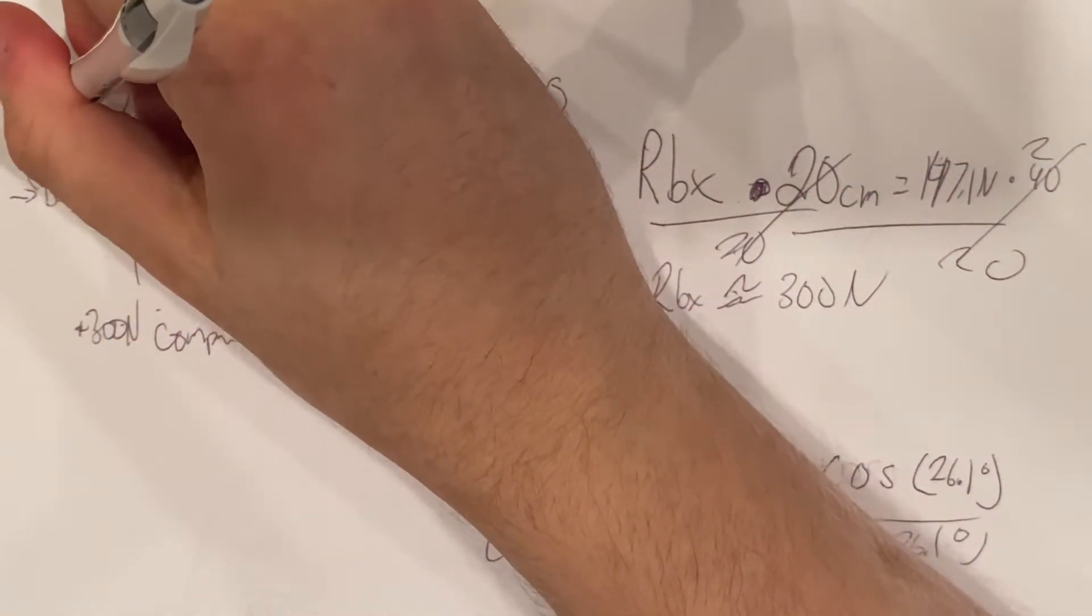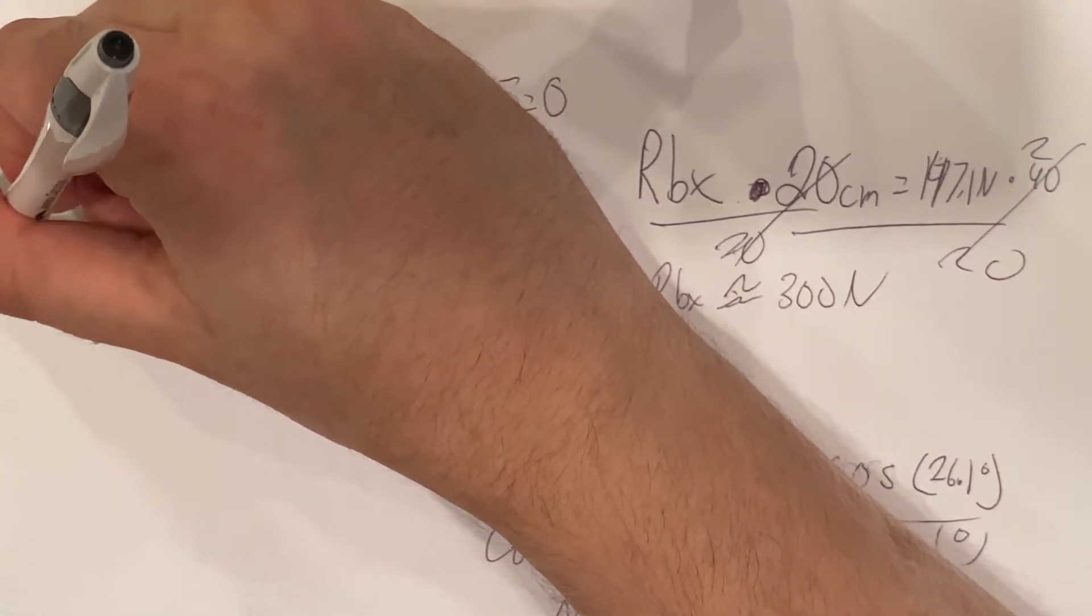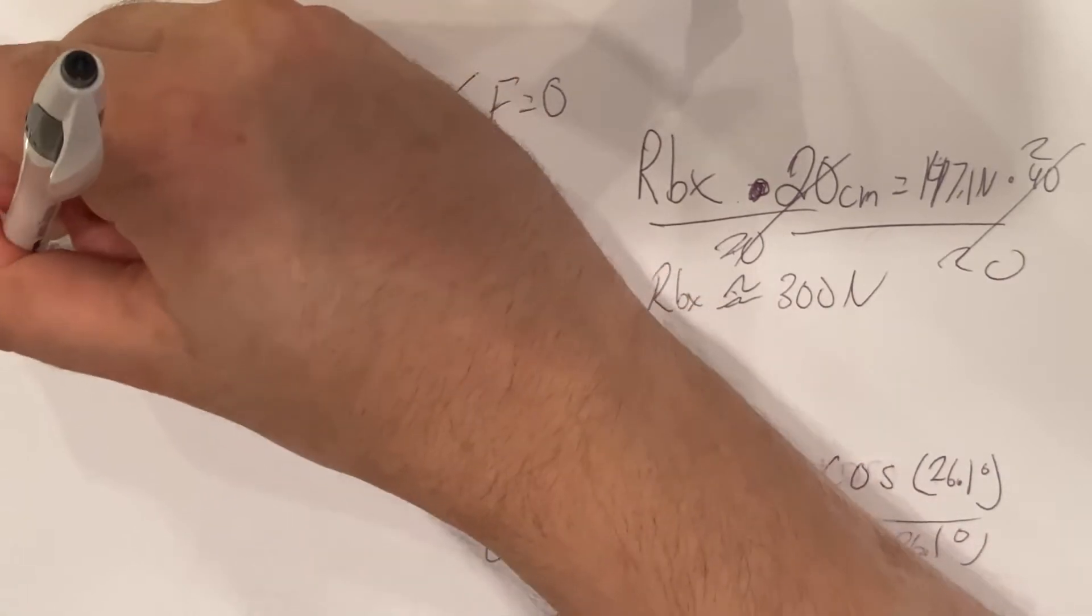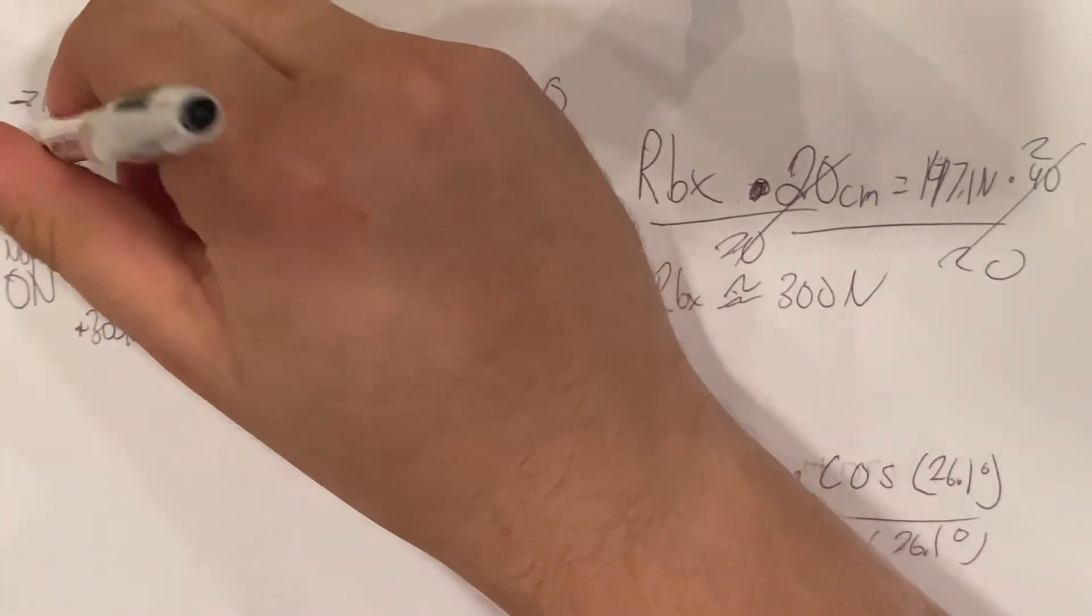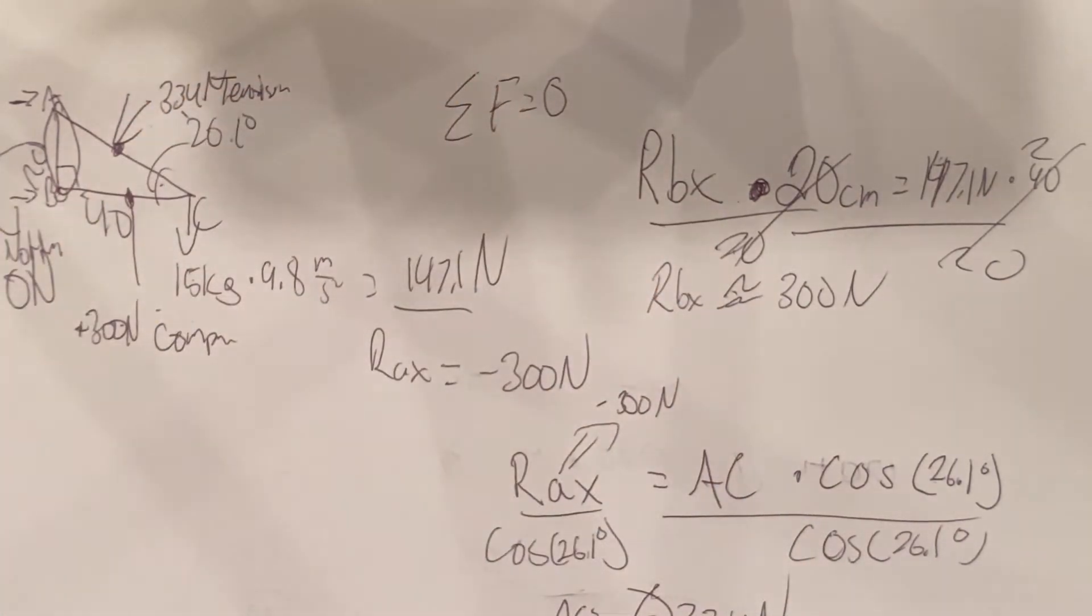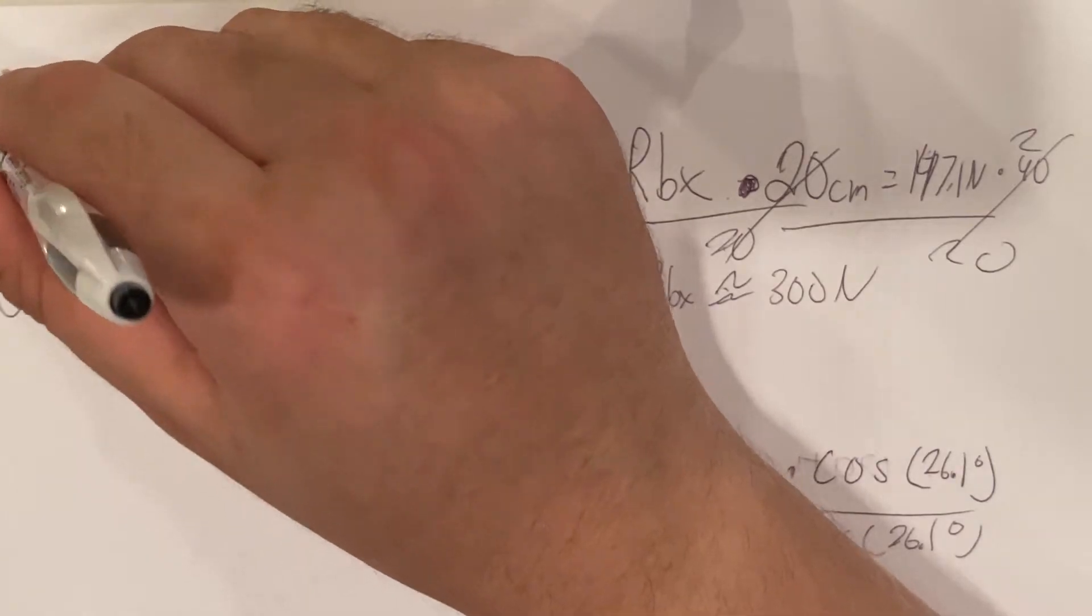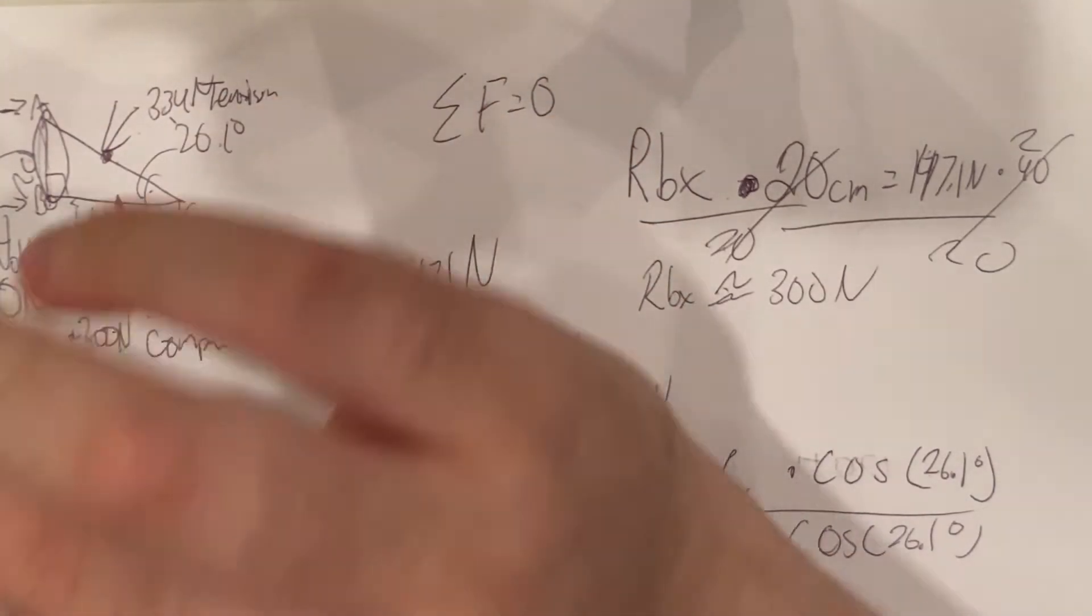And funny enough, this piece right here needs to hold nothing, zero newtons. So you can really just remove this piece altogether, and you won't have any other force acting upon this. You just have to make sure everything's stable.